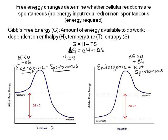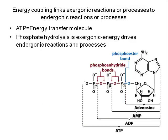So exergonic reactions release energy and endergonic reactions require energy. Most cellular processes and reactions are endergonic. How does the cell supply the energy input required? Using the energy capacity of adenosine triphosphate, ATP. ATP is a ribonucleotide — an adenine base linked to a ribose sugar linked to three phosphates, referred to as the alpha, beta, and gamma phosphates. The bonds between the phosphates represent stored potential energy. Breaking these bonds through hydrolysis reactions releases energy — that's an exergonic reaction.